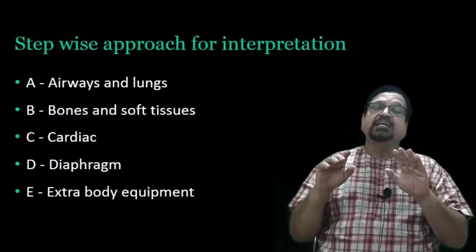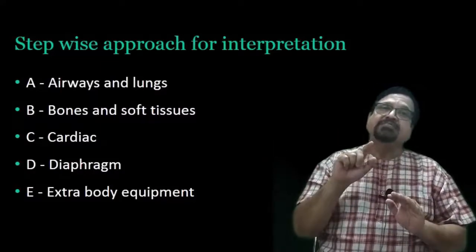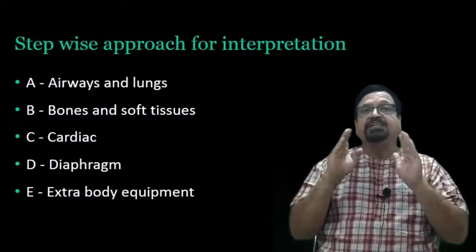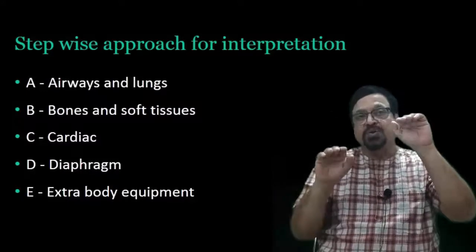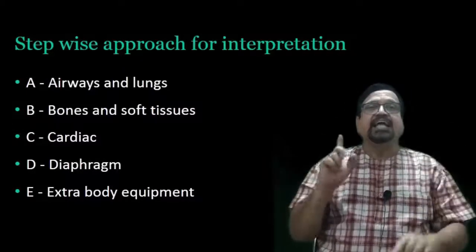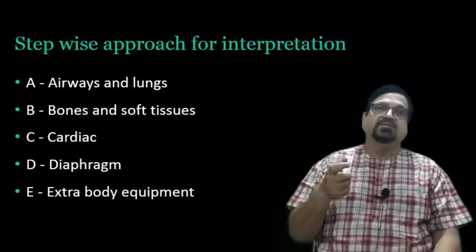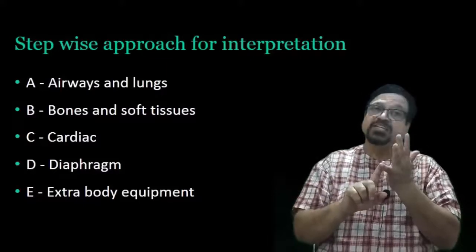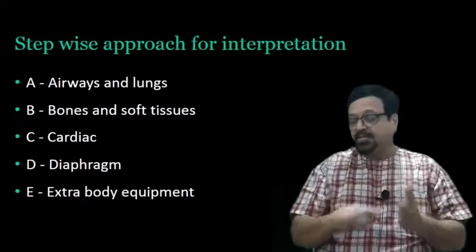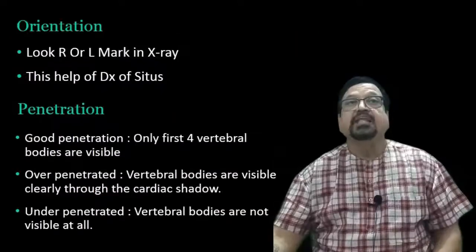D - diaphragm. Usually the right diaphragm is higher than the left. Both diaphragms have to be seen thoroughly. The right is seen completely; the left, because of the heart, is seen partially. Right is higher, left is lower - smooth contours, costophrenic angles clear. Then extra body equipment: pacemakers, leads, endotracheal tube - these all have to be seen and their location noted.